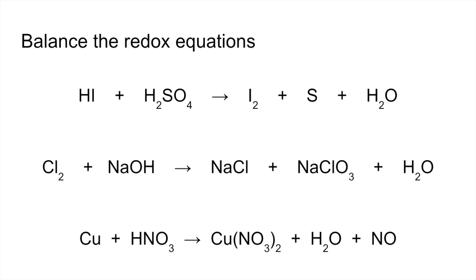Oxidation number changes in the first one: we've got minus 1 plus 6 going to 0 and 0. We've got a change of 1 for the iodine but a change of 6 for the sulfur. The 1 we need to multiply by 6 so that there's a total change of 6 for the iodine.